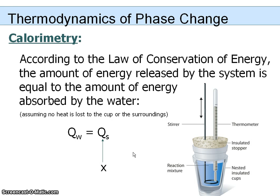According to the law of conservation of energy, the amount of energy released by the system is going to be equal to the amount of energy absorbed by the water, because energy is being conserved. This also assumes that no heat energy is going to be lost into the cup or into the surroundings. So it's very important that your calorimeter have some sort of a lid on top, and it must be a very insulated container to minimize energy loss.